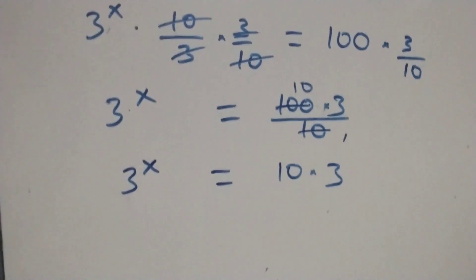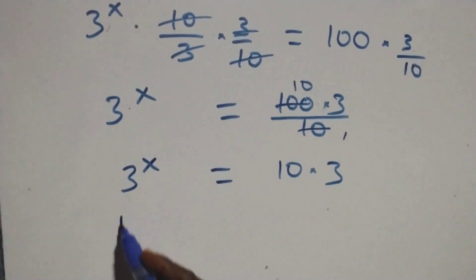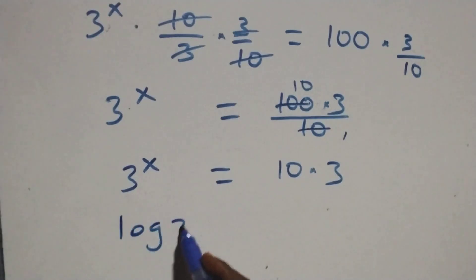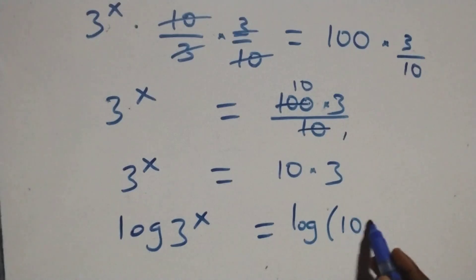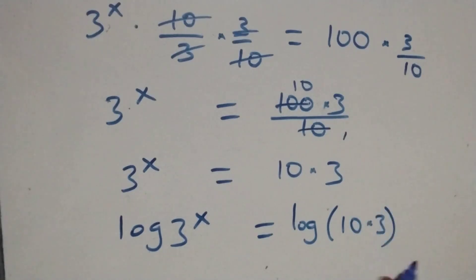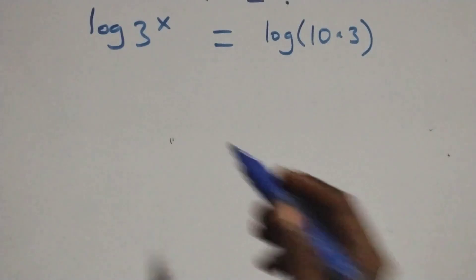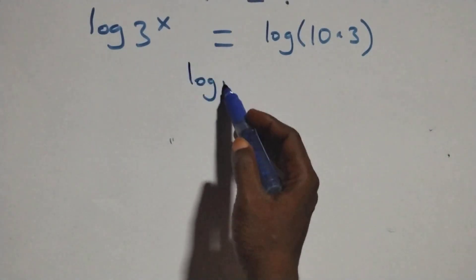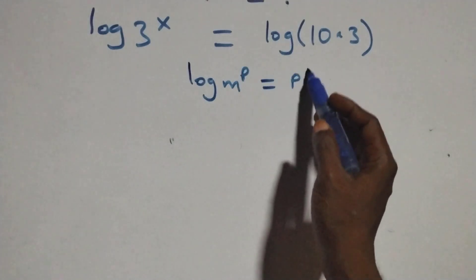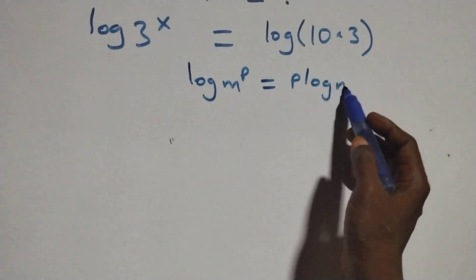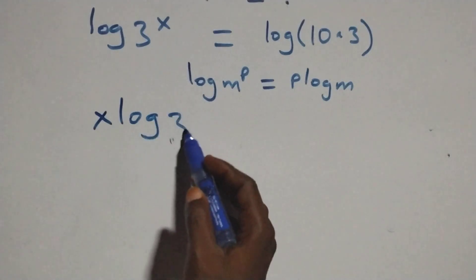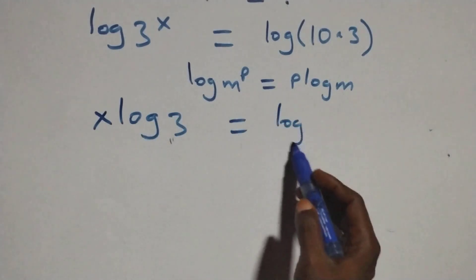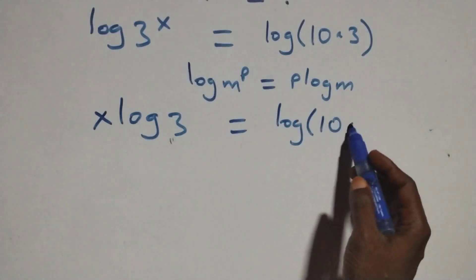Then here we take the log on both sides. That is here we have log 3 raised to power x equals to log 10 times 3. Then here we apply the power log rule: when we have log n raised to power p, this is the same as p log n. And so here we have x log 3 equals to log 10 times 3.